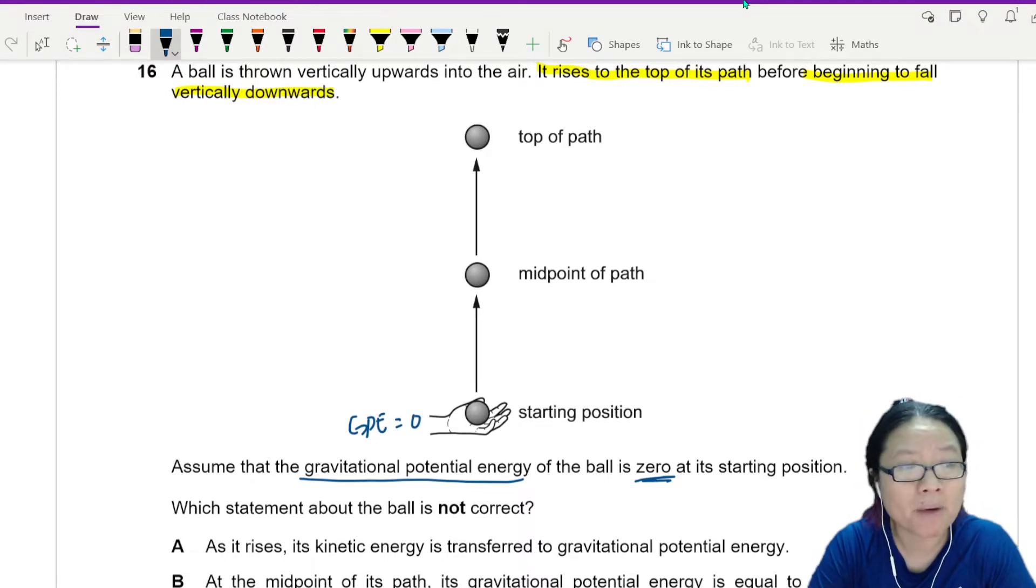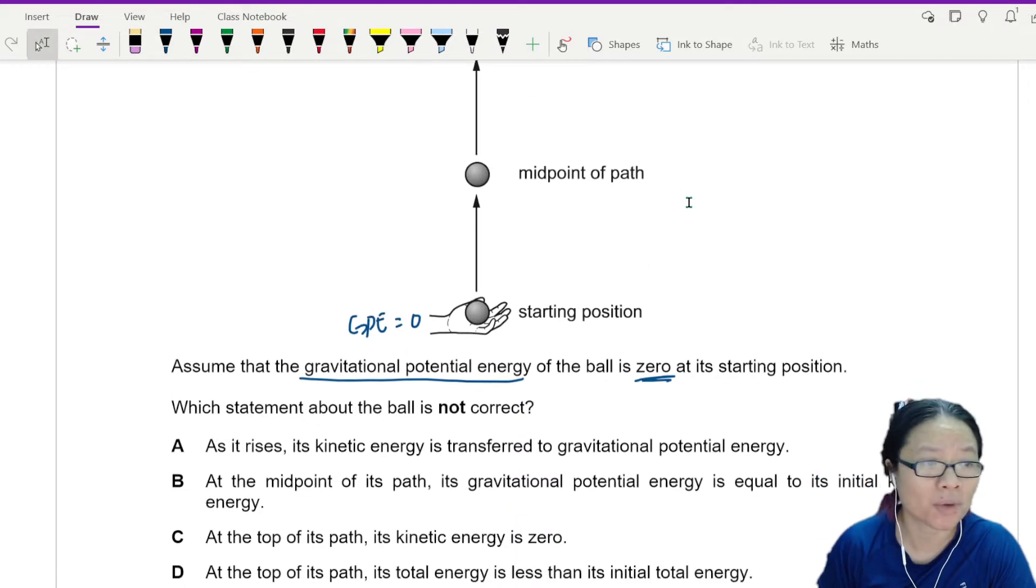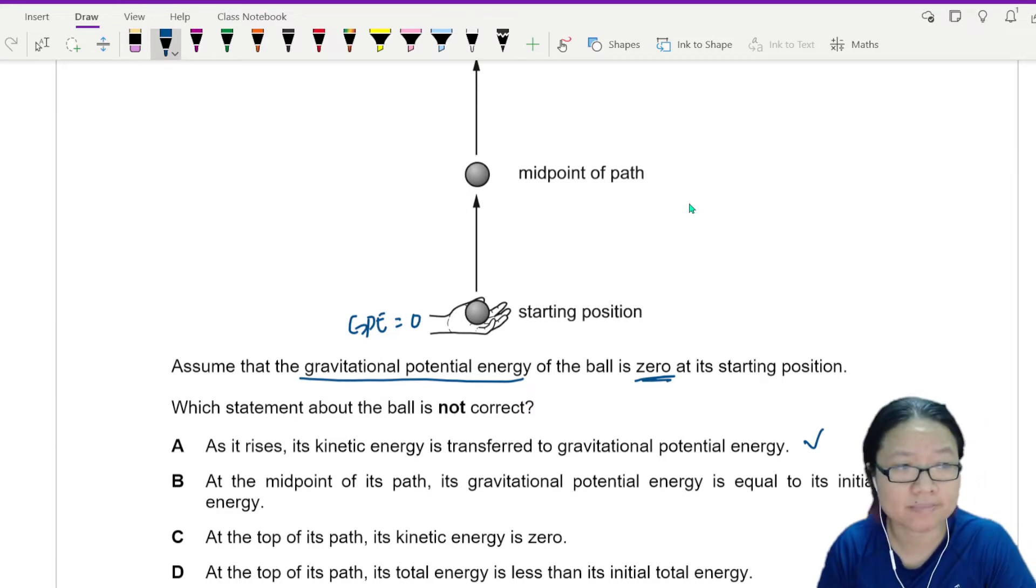Which statement about the ball is not correct? As it rises, the kinetic energy is transferred to gravitational potential energy. Definitely. Because the ball is losing speed and it's gaining height.